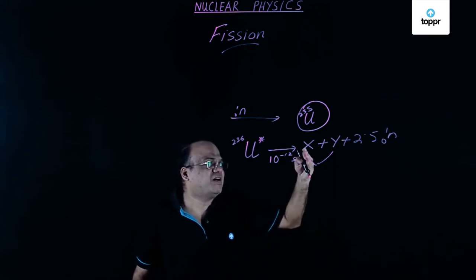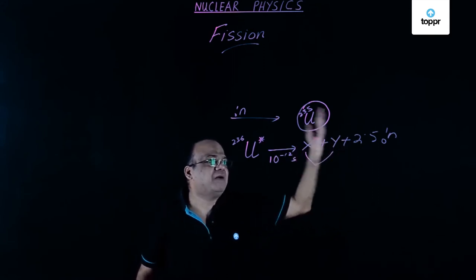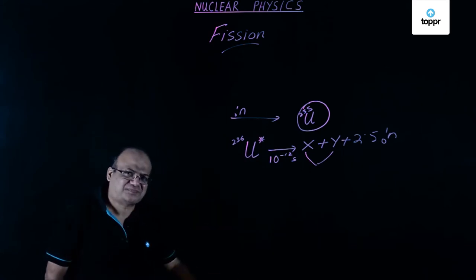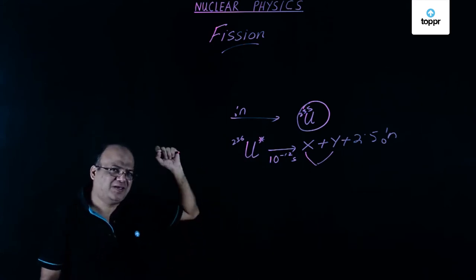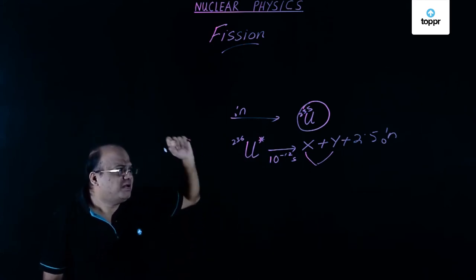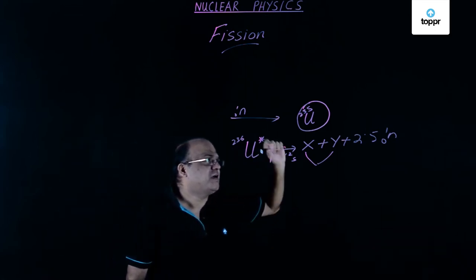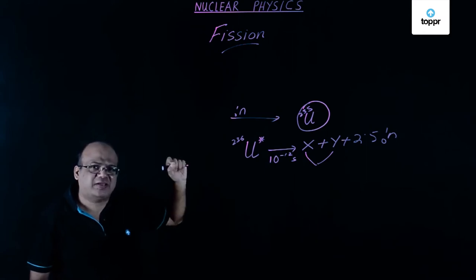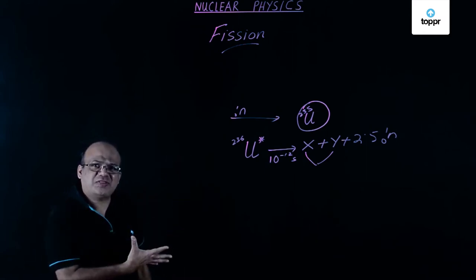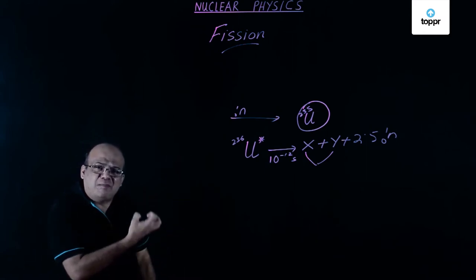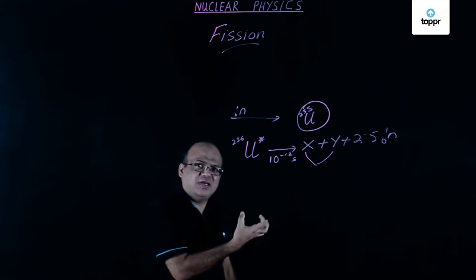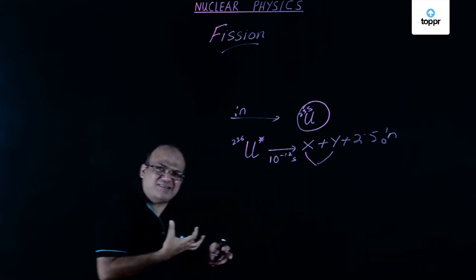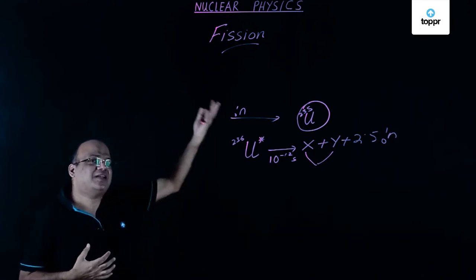Mass defect is the mass of all the daughter products minus the mass of the parent nucleus. The binding energy per nucleon of daughter nuclei is more by 0.9 MeV compared to the parent nucleus, and this results in the release of energy. This is called nuclear fission.